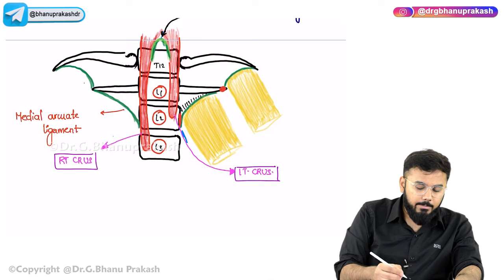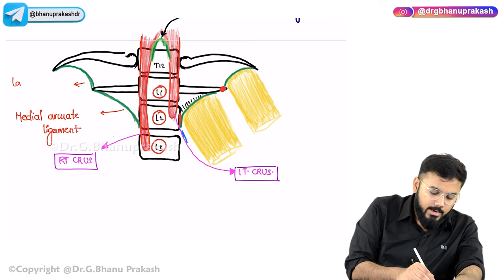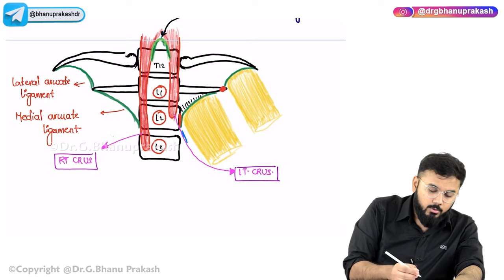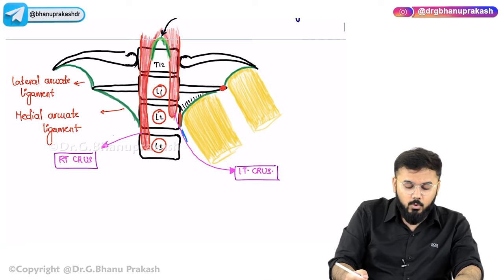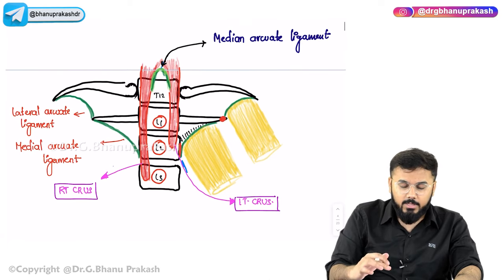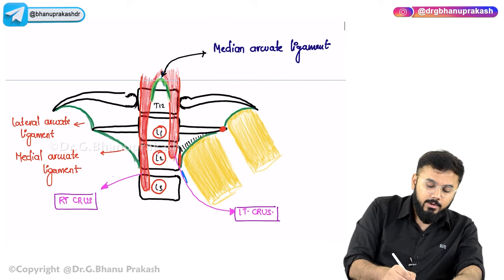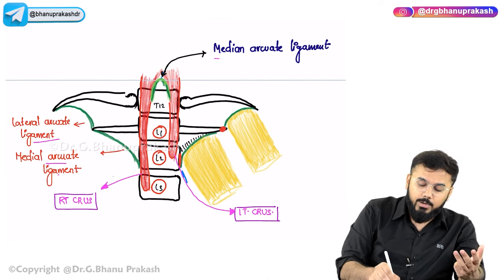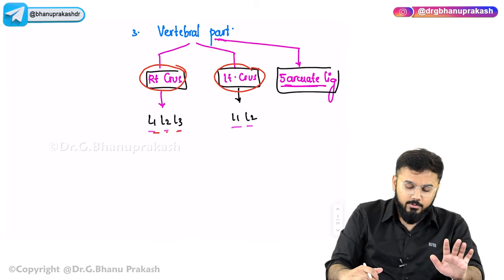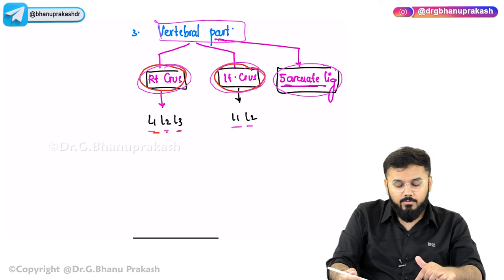Overall there are five arcuate ligaments: two lateral, two medial, and one median arcuate ligament. The right crus, left crus, and all five arcuate ligaments together form the vertebral part of the diaphragm, all originating from the vertebrae. There are two lateral arcuate on right and left, two medial arcuate on right and left, and one median arcuate.